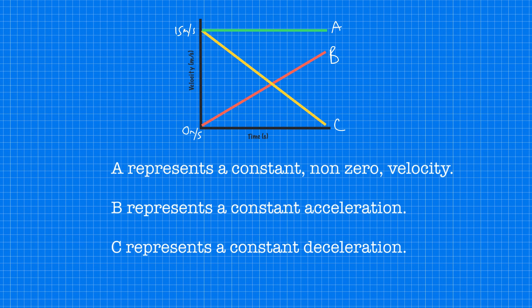So in summary we can see a straight horizontal line, not at zero, represents a non-zero constant velocity. A straight sloping upwards line represents a constant acceleration. And a sloping downwards line represents a constant deceleration. Remember the steepness of those lines tells you a little bit about the acceleration.